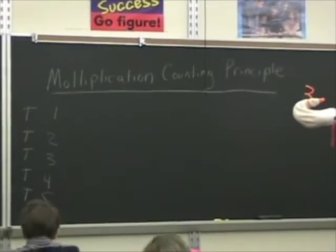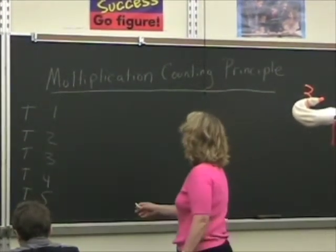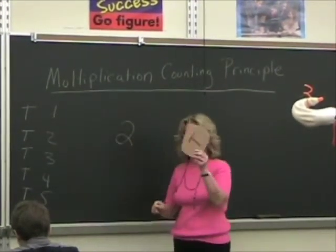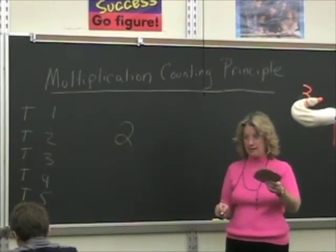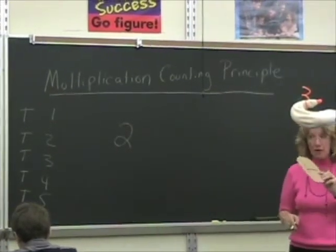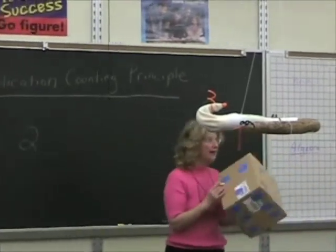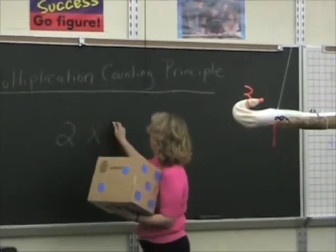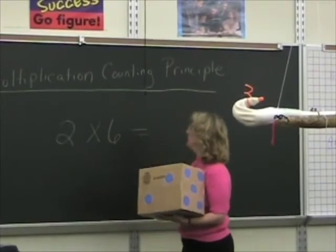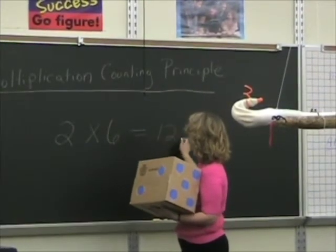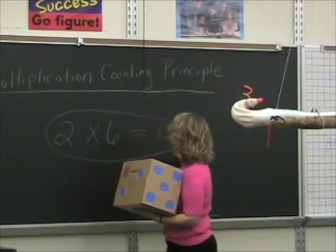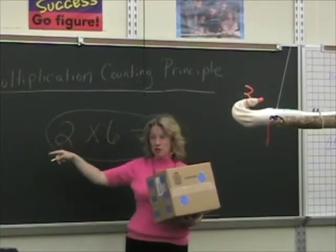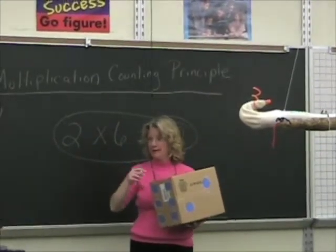So on the coin, there were only two possible things that could happen, right? A head or a tail. But each one of those could have been paired with six here, correct? So two times six is equal to twelve. And that is a lot easier than making a chart or actually throwing them.